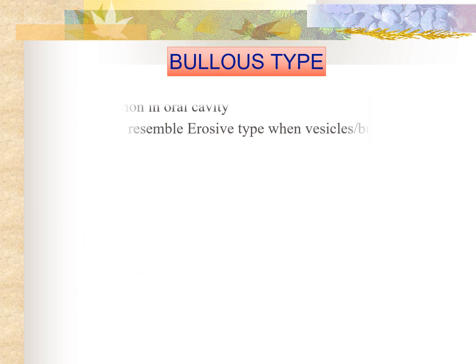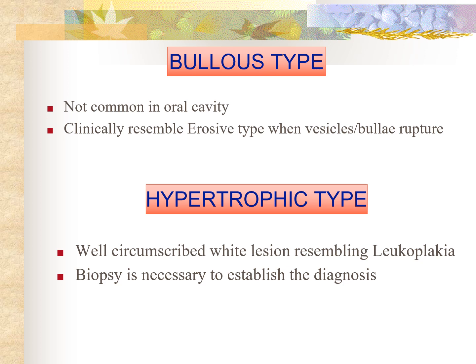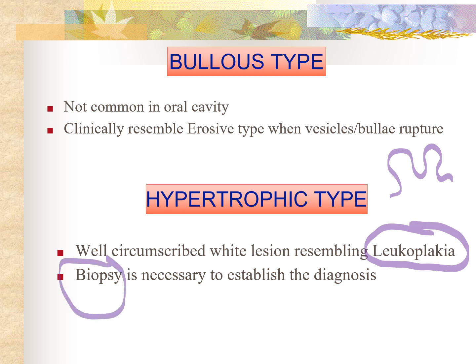The bullous type is not common in the oral cavity; if it occurs, it will rupture and present as ulcers. The hypertrophic type shows large plaques resembling leukoplakia and other pre-malignant lesions — in such cases, biopsy becomes necessary to establish the diagnosis.